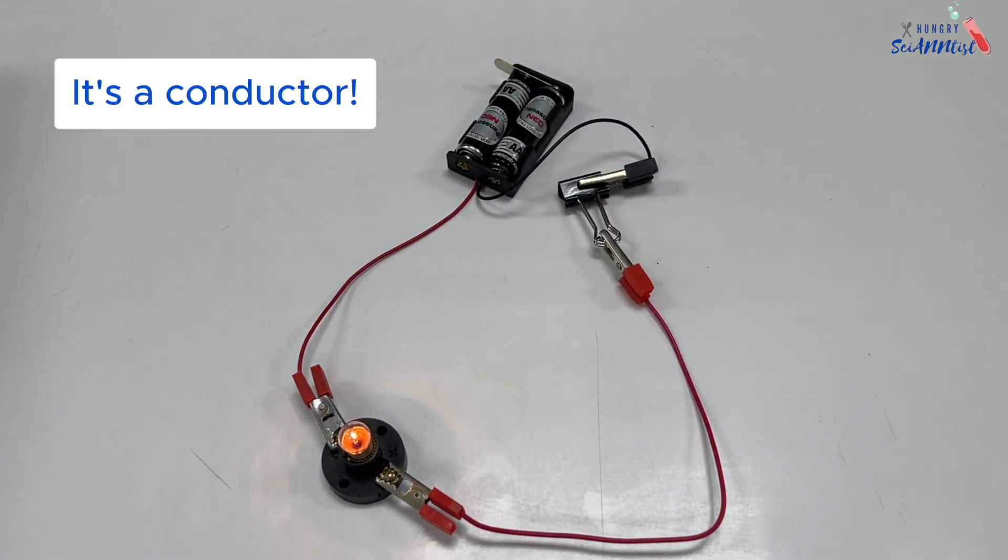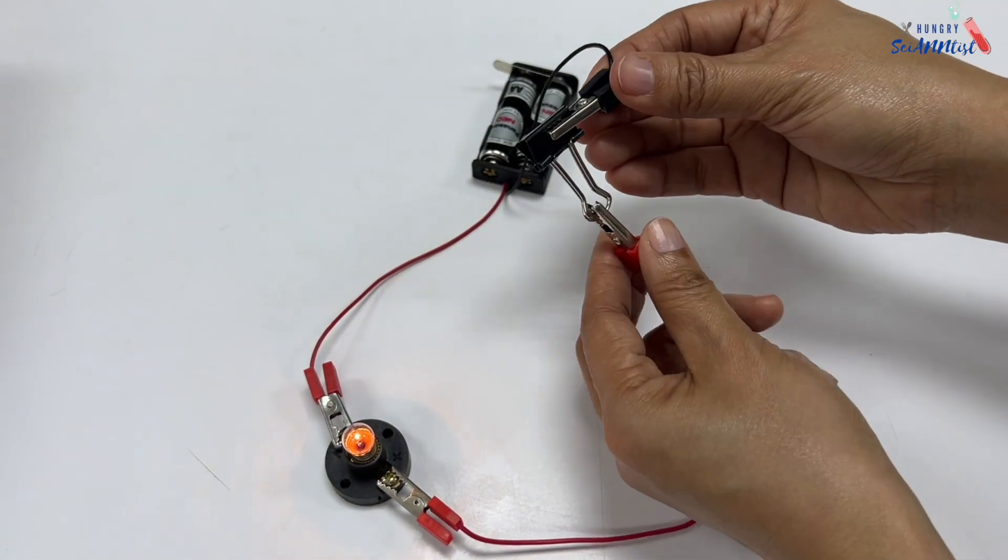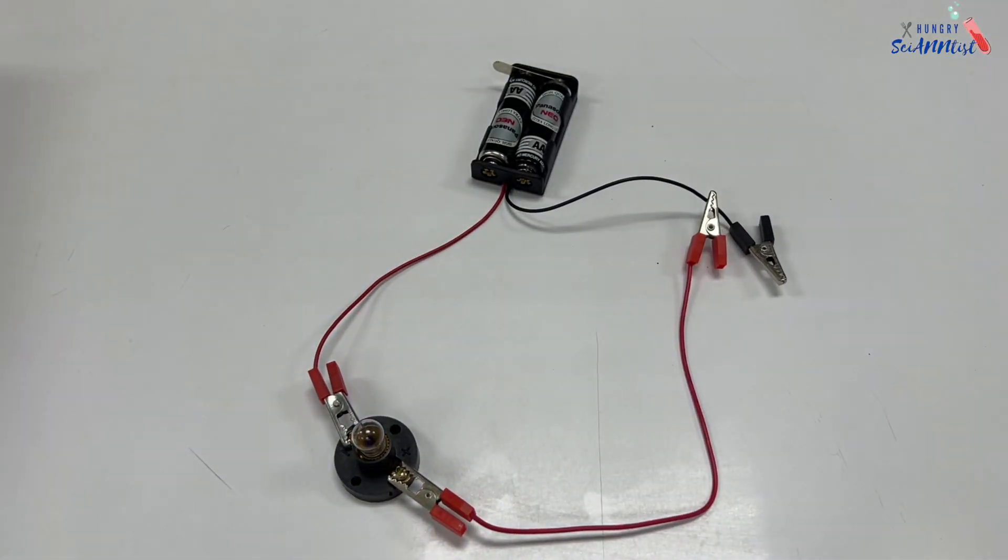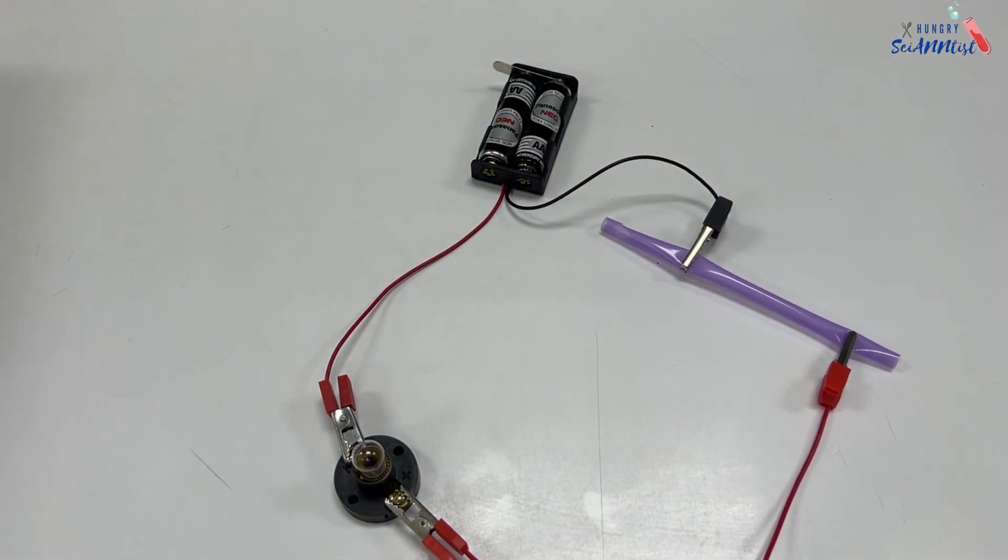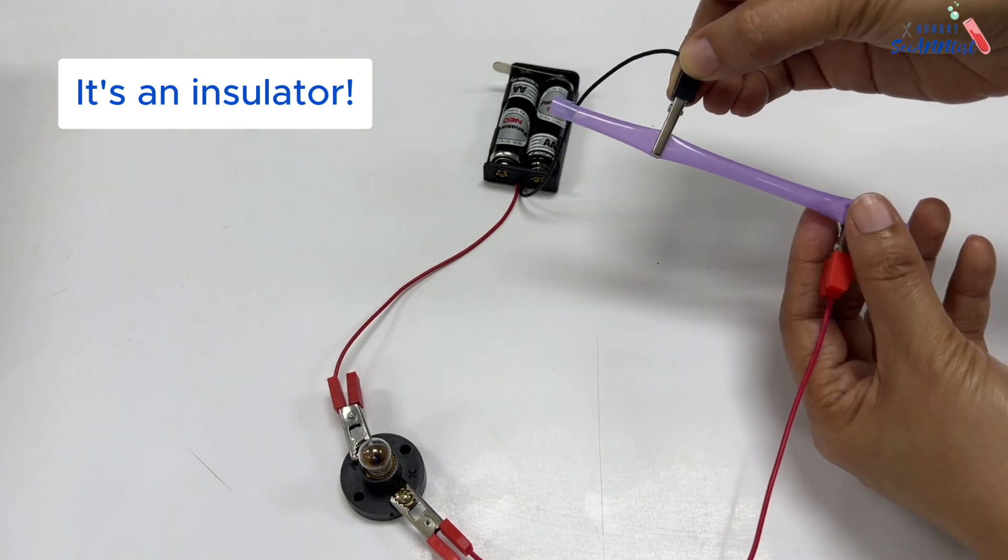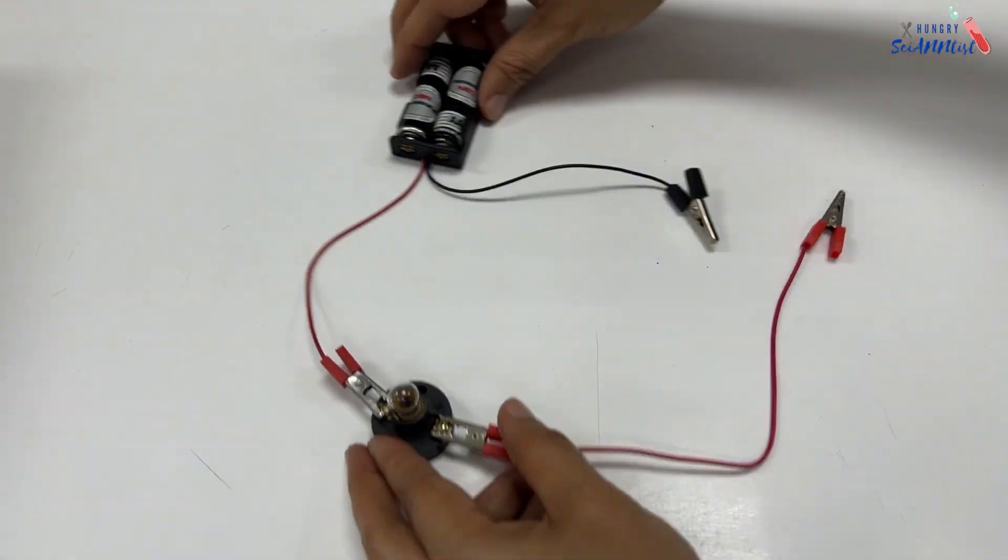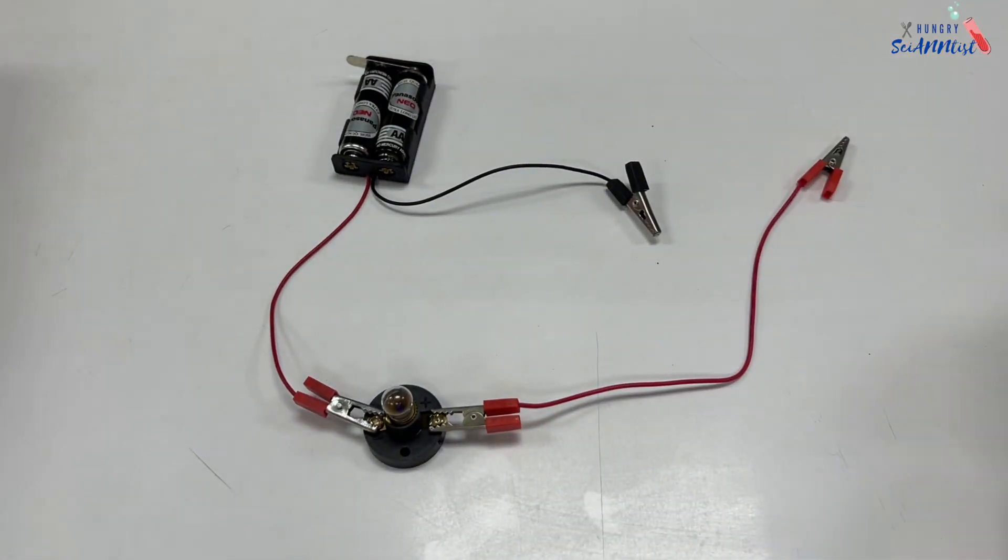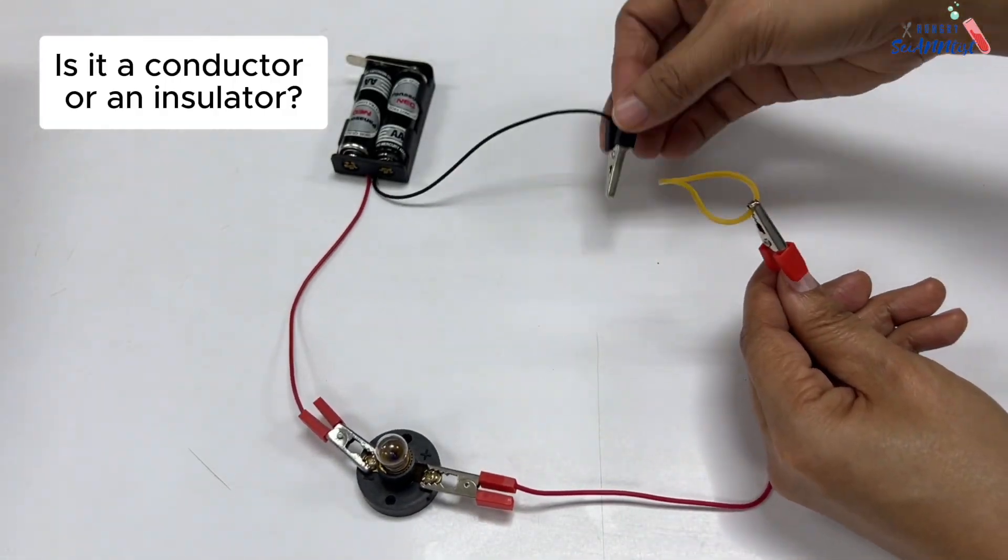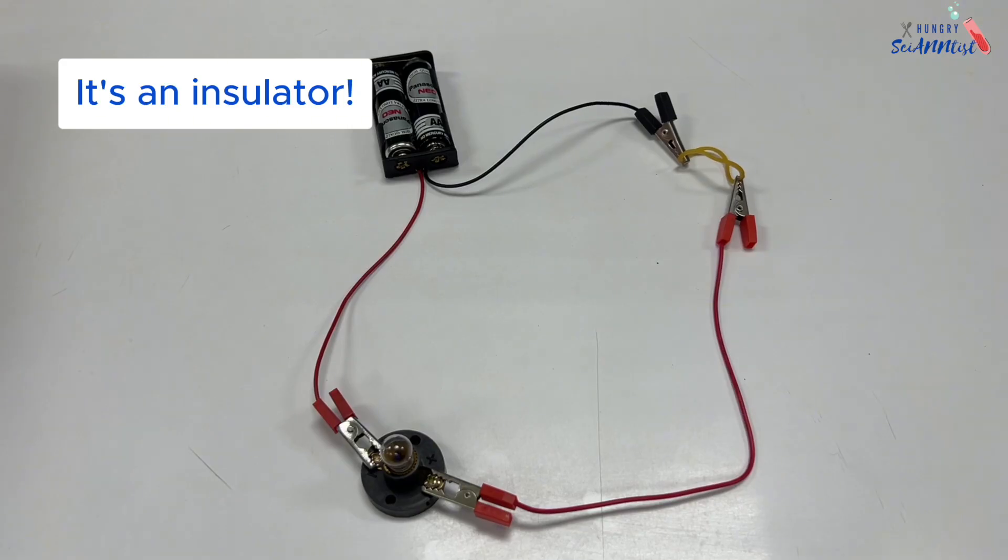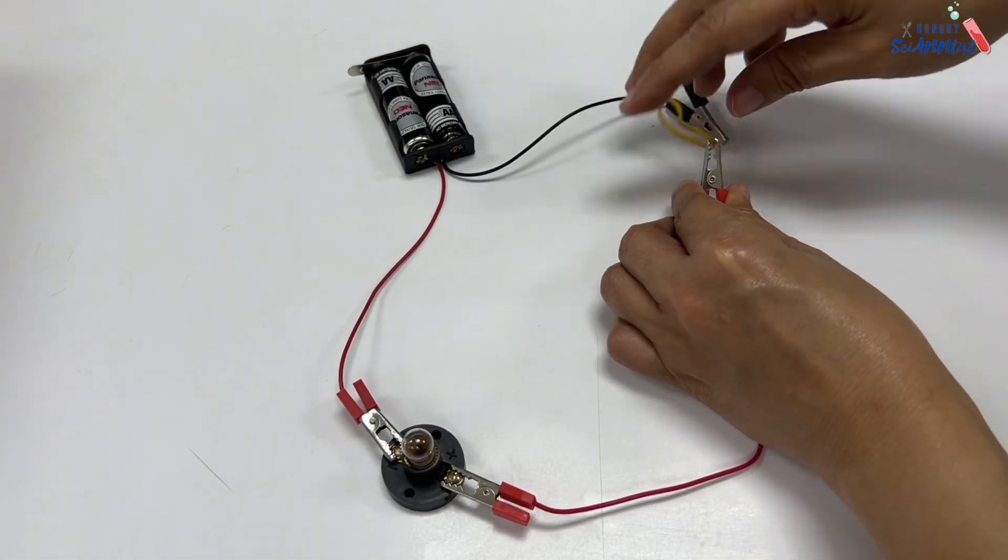A binder clip is a conductor. Plastic straw is an insulator. Rubber band is an insulator.